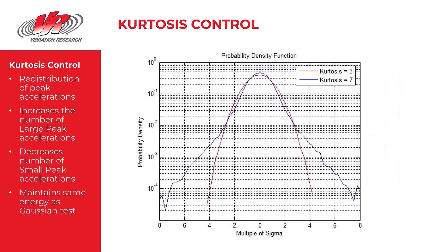In 2005 vibration research developed a method to control the kurtosis of a random vibration test with their patented kurtosian. This kurtosis control technique increases the number of large acceleration peaks in the random vibration test while maintaining the same RMS values and the same PSD. Therefore the test contains the same amount of energy as the Gaussian random vibration test.